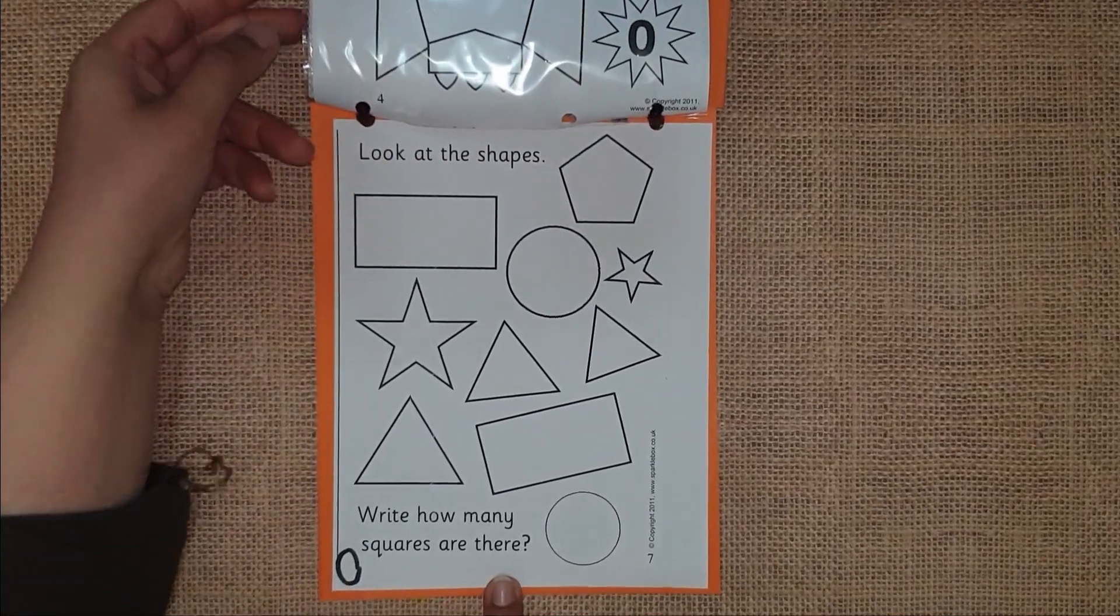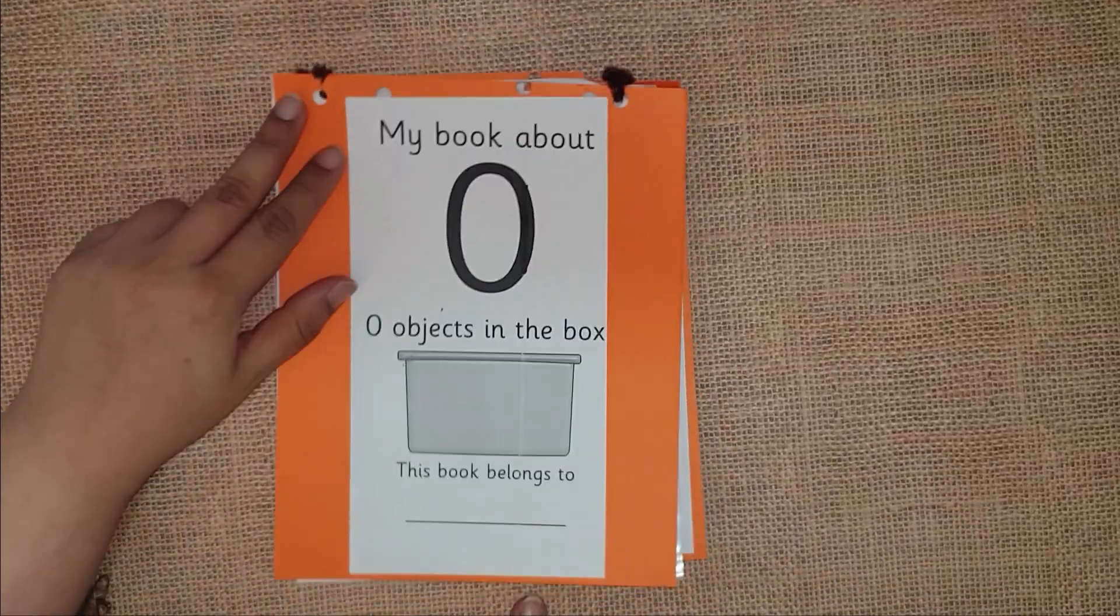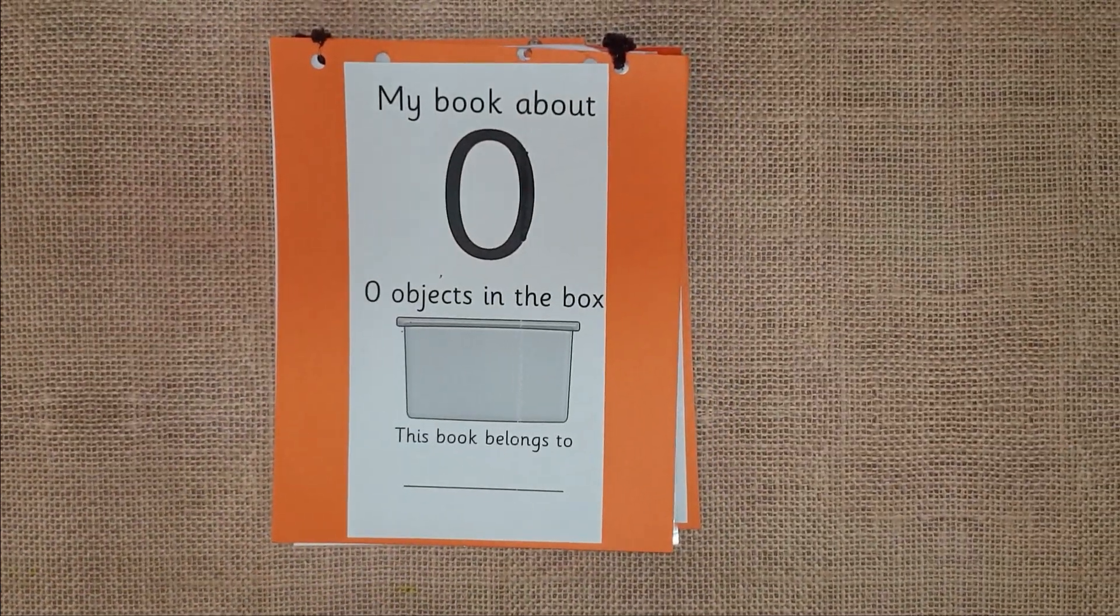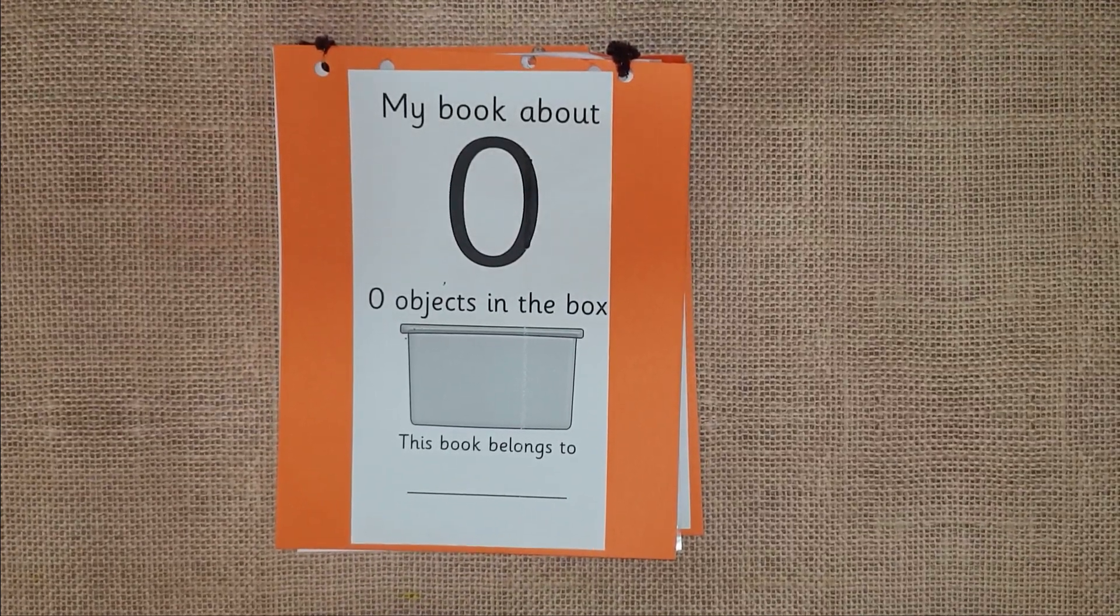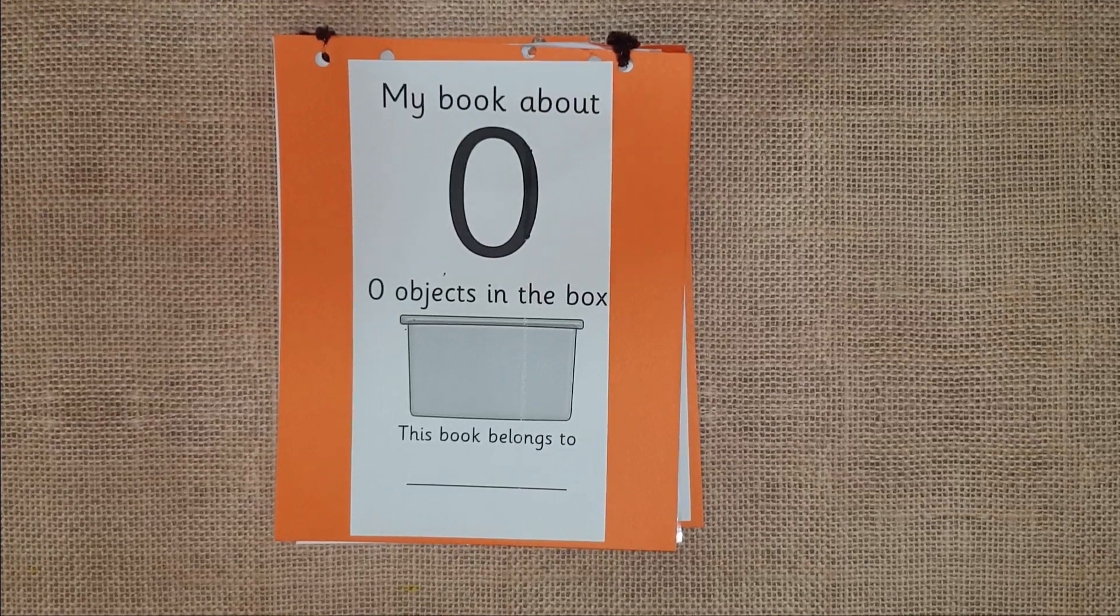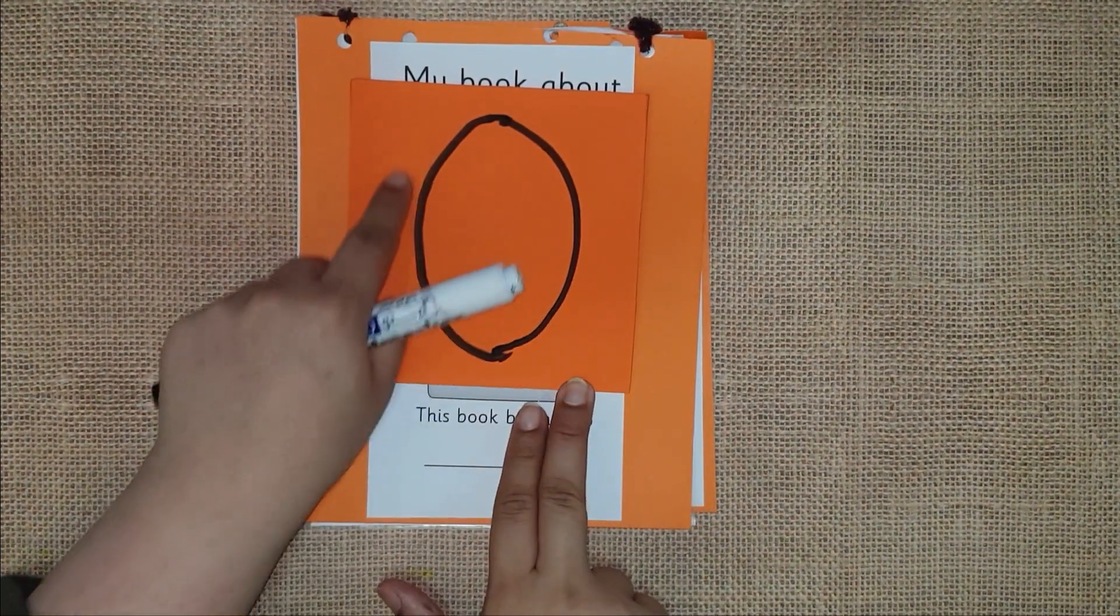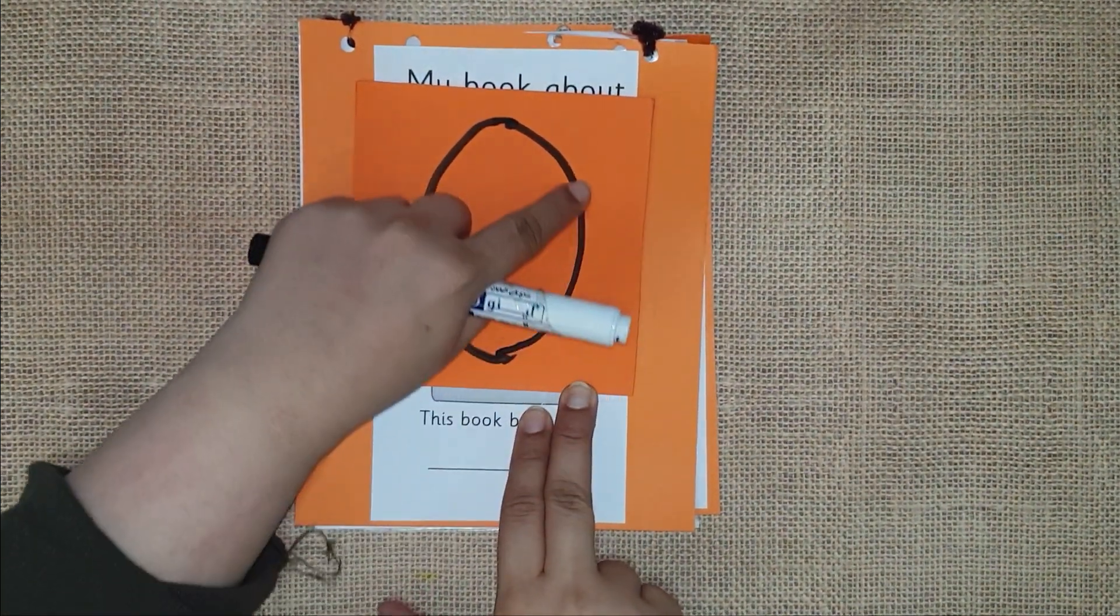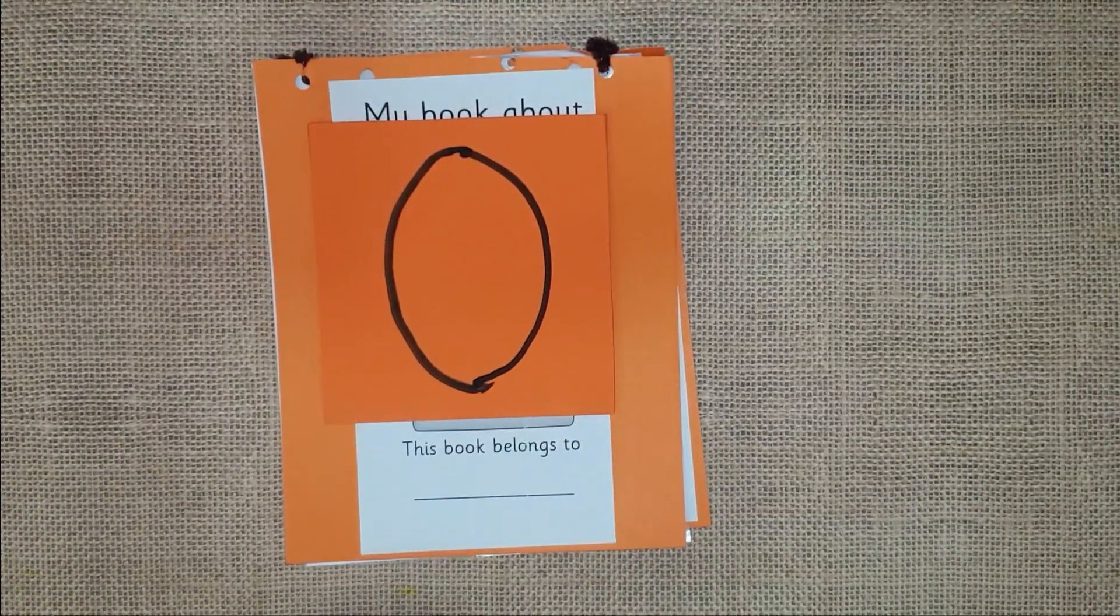Okay, so what we have learned? That zero is the number which comes before all the numbers, and how to write zero: left curve, go up and make right curve. Thank you so much for watching.